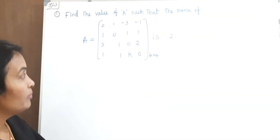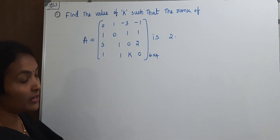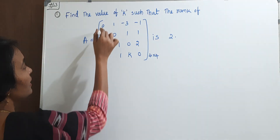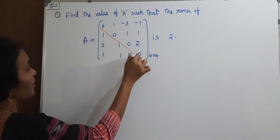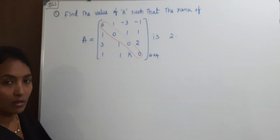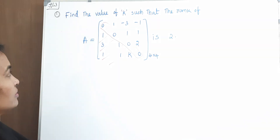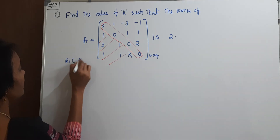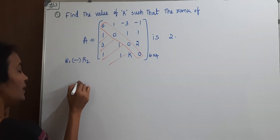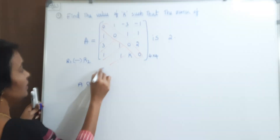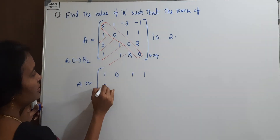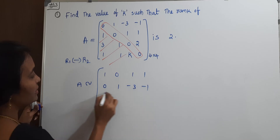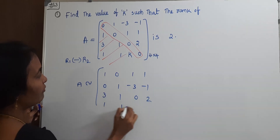For convenience, interchange R1 and R2. The matrix becomes: Row 1: 1, 0, 1, 1 / Row 2: 0, 1, -3, -1 / Row 3: 3, 1, 0, 2 / Row 4: 1, 1, k, 0. This is our principal diagonal. We need the elements below the principal diagonal to become 0, so we apply R3 → R3 minus 3R1, and R4 → R4 minus R1.